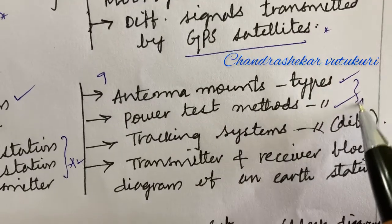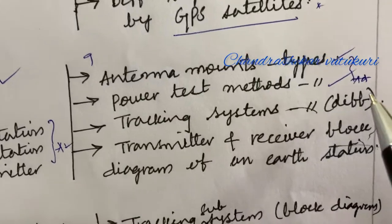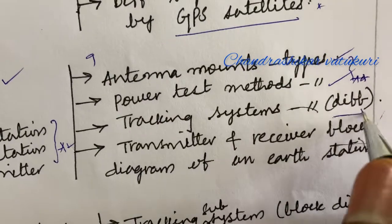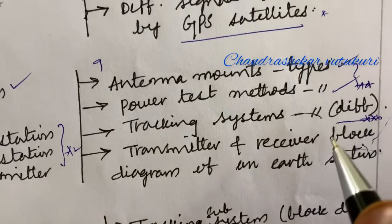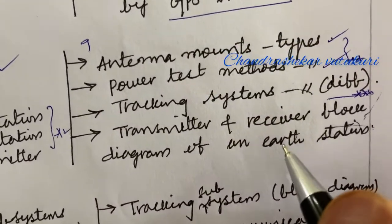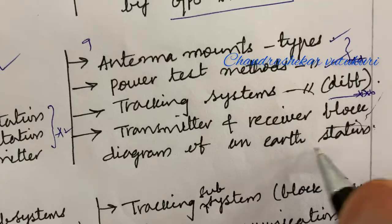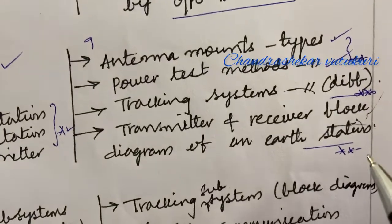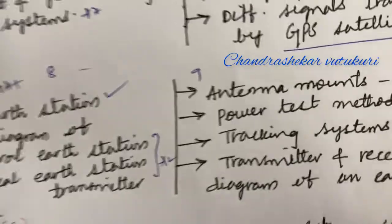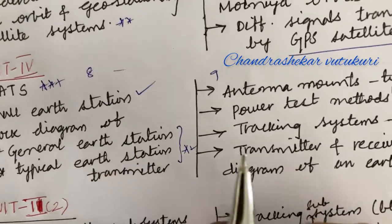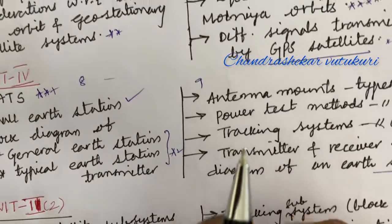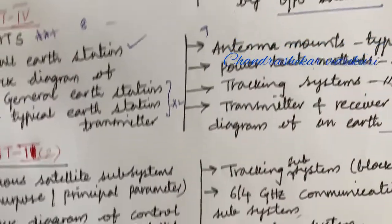The 9th question is all about antenna mounts, their types and differences, and the antenna test methods and their types — set as the topmost question which may occur as short as well as long questions this time. Tracking systems and their types and differences are also set as a top question, with one short question possibly occurring in 9b. The transmitter and receiver block diagram of a hub station is also set to be one of the long questions for 10 marks. Dear students, that covers Unit 4, questions 8 and 9.